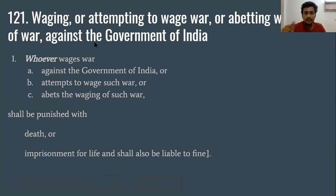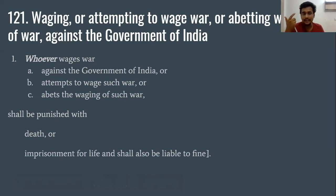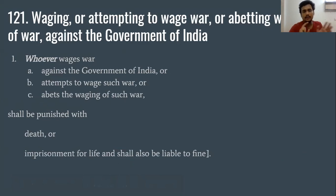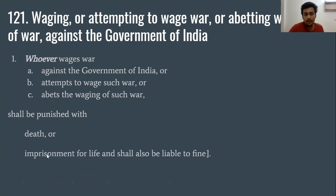Section 121 covers Waging War, Attempt to Wage War, and Abetment of such Waging War. To punish these three substantive offenses, you will be punished with death or imprisonment for life, plus fine.